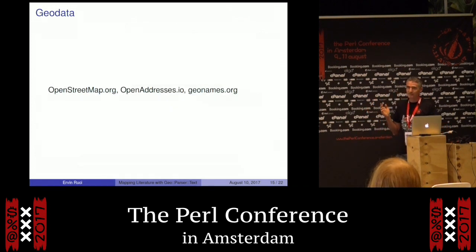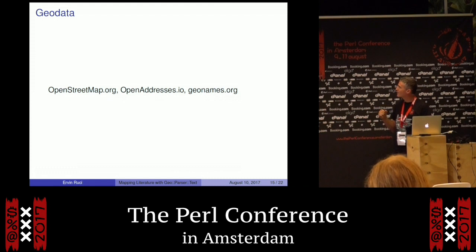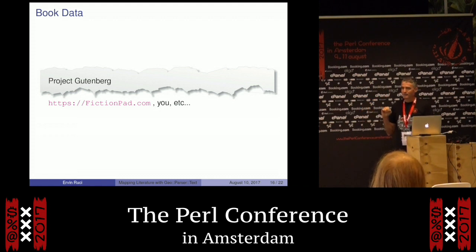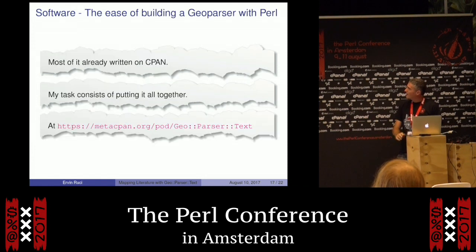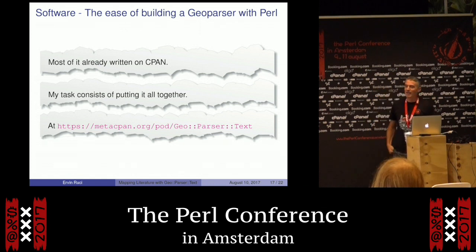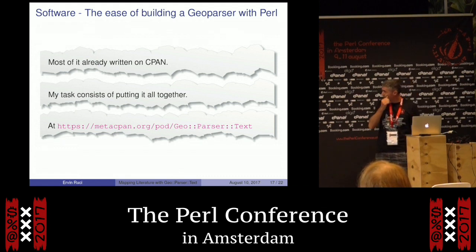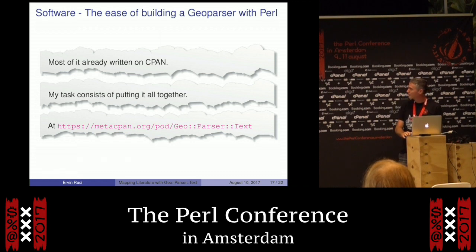The data is what I'm really struggling to find. There is OpenStreetMap for map data, Open Addresses and GeoNames for the geoparsing part — for X, Y, Z. And then there's Project Gutenberg, and another project of mine, fictionpod.com, and whatever else I could come across. For the software, I've been building it myself. There is a lot of NLP stuff on CPAN, but even Stanford Core NLP is not perfect. If you've got to do it right, you have to do it yourself, and I'm using various bits and pieces I can find on CPAN.